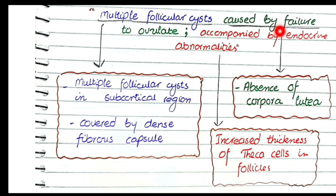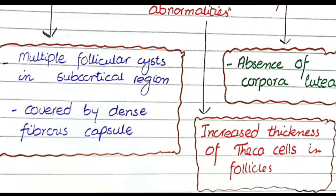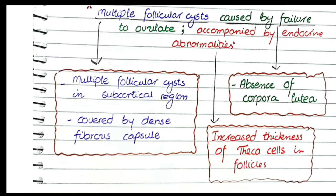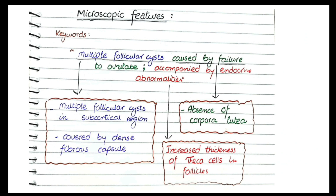The three key microscopic features are: first, multiple follicular cysts in the subcortical region covered by a dense fibrous capsule; second, absence of corpus luteum — because ovulation has failed, the corpus luteum is never formed; and third, increased thickness of theca cells in the follicles, reflecting the endocrine abnormalities, as theca cells are active hormone-producing cells. So remember: multiple follicular cysts, absence of corpus luteum, and increased thickness of theca cells.